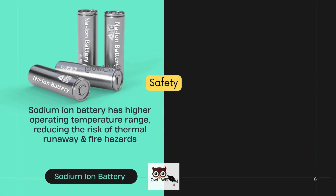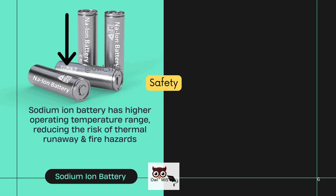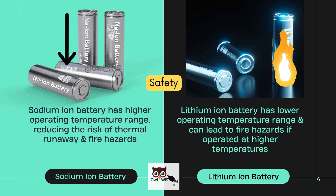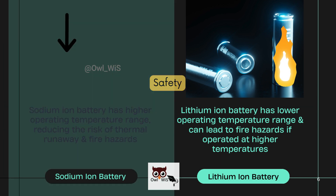Sodium ion batteries have a higher operating temperature range, reducing the risk of thermal runaway and fire hazards. Lithium ion batteries, on the other hand, have a lower operating temperature range and can lead to fire hazards if operated at higher temperatures.